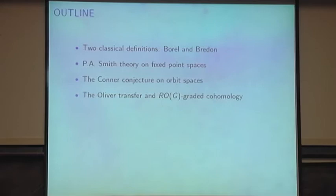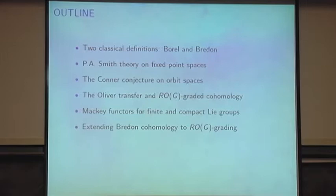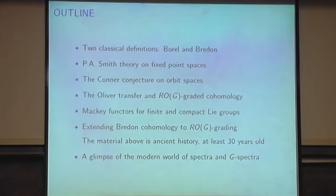Really on just the underlying abelian group of the real representation ring. To do that, you need to understand Mackey functors, which were first defined in representation theory for algebraic purposes. I'll explain them algebraically for finite groups, and then reinterpret them topologically and show how that leads to a definition for compact Lie groups. Then to show how to extend Bredon cohomology from the integers to ROG grading, you use Mackey functors and a little trick.